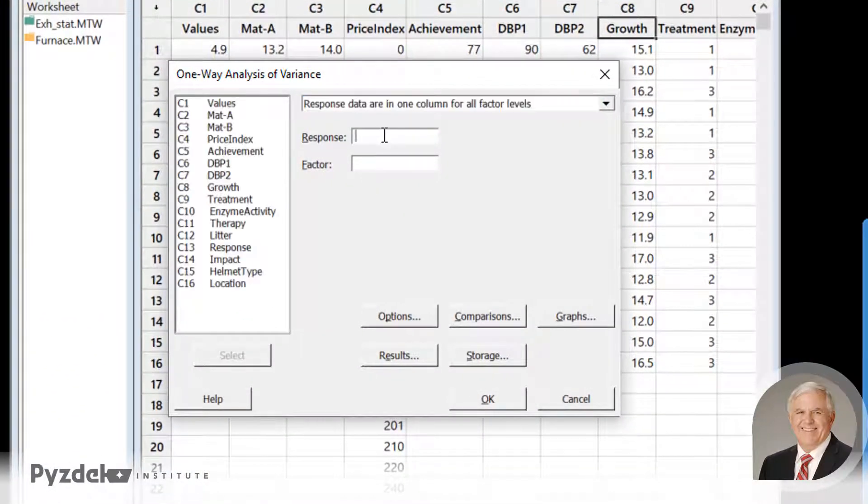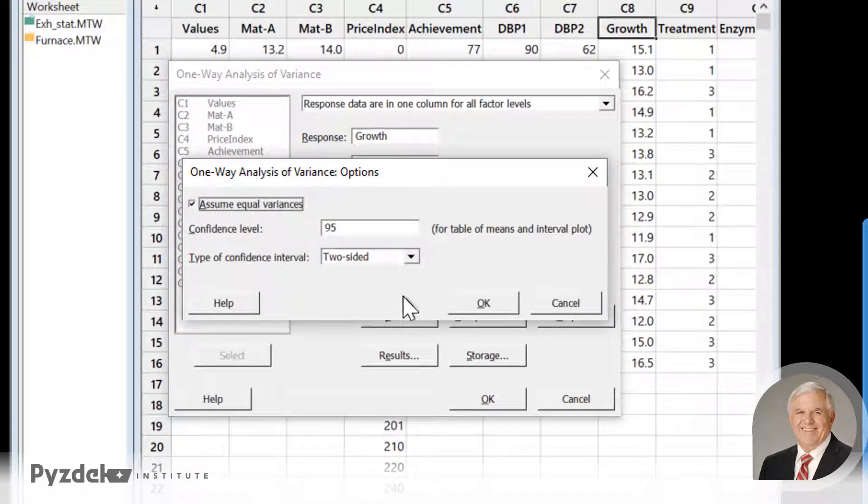The response that we're interested in is growth, and the factor we're interested in is treatment. So we have various options. We're going to assume equal variances, and we've learned how to test this hypothesis before. Two-sided confidence interval, and we're interested in a difference in either direction.